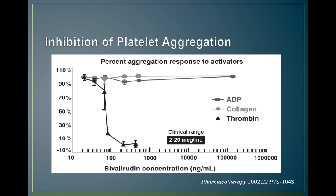This slide shows percent aggregation response to activators — essentially the inhibition of platelet aggregation. Even at small bivalirudin concentrations, you see a large inhibitory response to thrombin, collagen, and ADP. The thrombin response tapers off at higher concentrations, while the ADP and collagen responses persist.